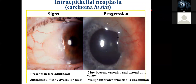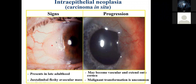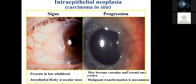Neoplasia, or carcinoma in situ, is where you have a very early cancer that hasn't metastasized and is just limited to that area — this is what you call intraepithelial neoplasia. These present in late adults, unlike the benign ones that present much earlier. You'd see a vascular mass, and as it proceeds, it becomes more vascular and then begins to spread onto the cornea.